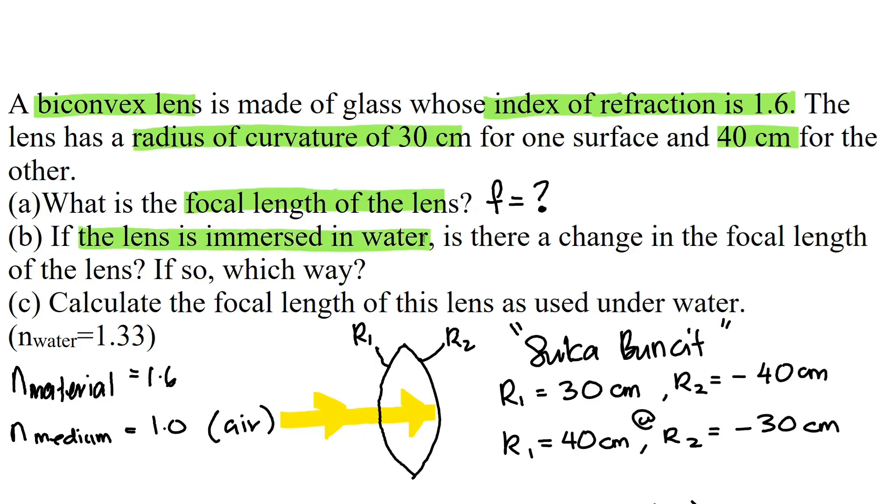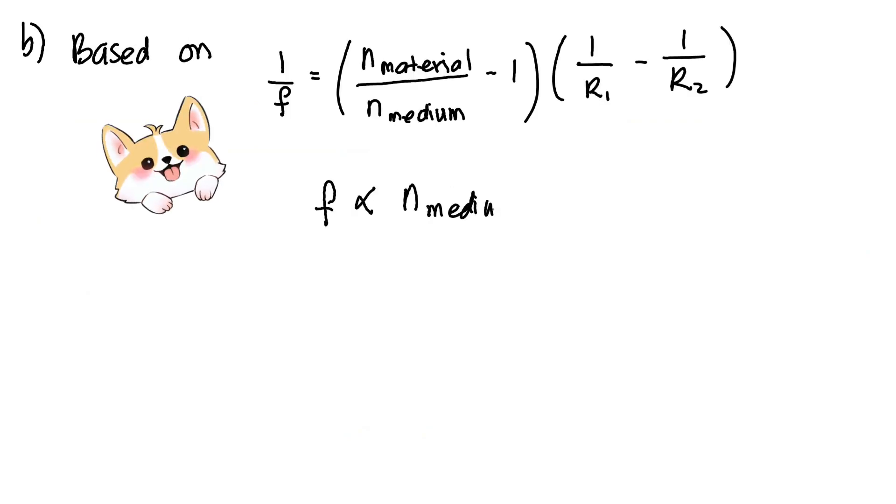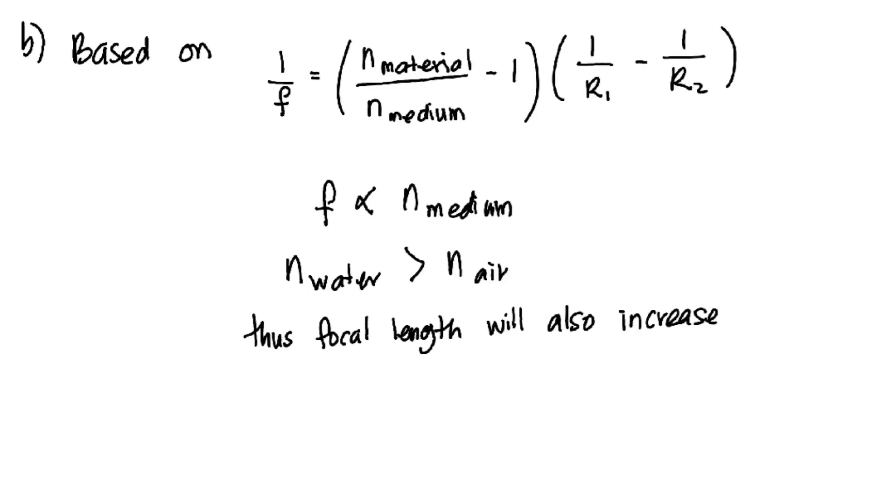Question B. If the lens is immersed in water, is there any change in the focal length and which way? Based on lens maker's equation, focal length is directly proportional to the refractive index of the medium. And as we know, the refractive index of water is much higher than the refractive index of air. Hence, the focal length will also increase.